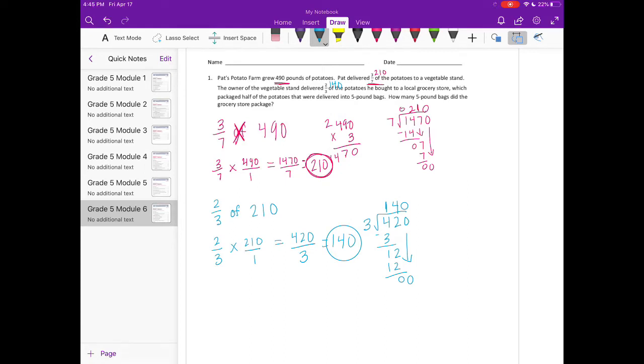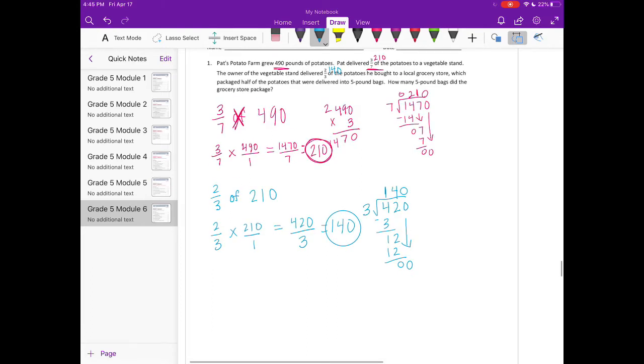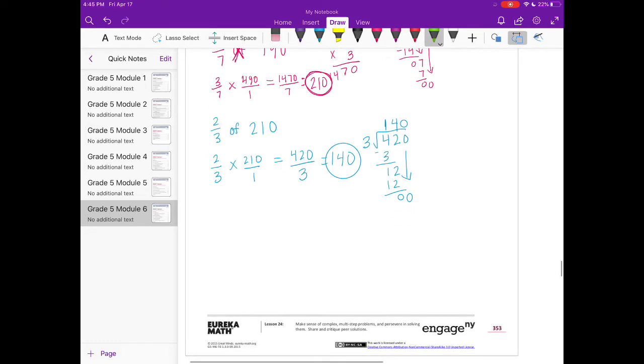So they delivered two-thirds, or 140 potatoes, to the local grocery store, which then packaged half of the potatoes that were delivered. Let's figure out what half of those would be. Now we're on one-half of 140, and one-half of 140 would be 70 potatoes.